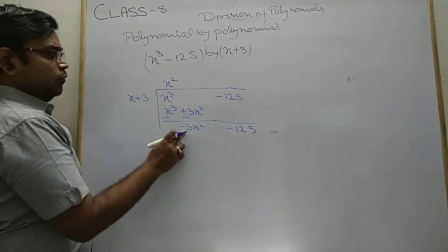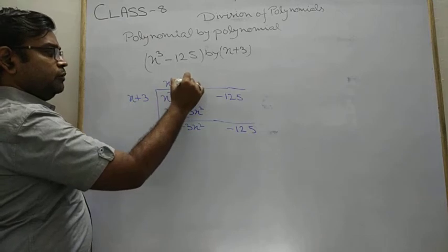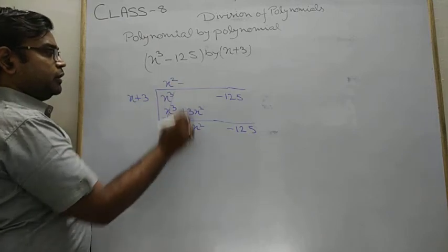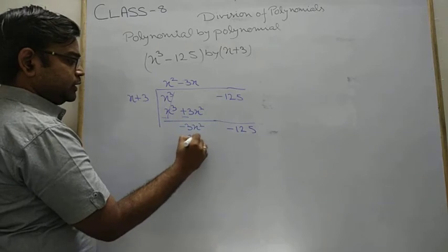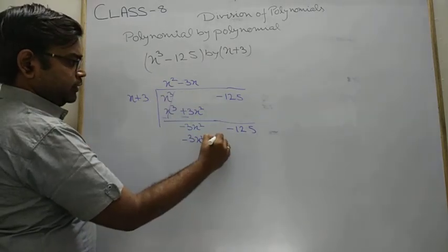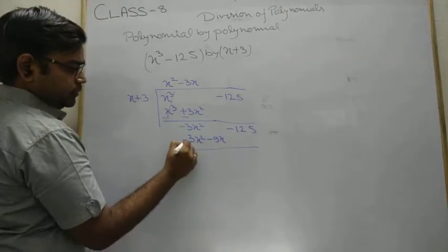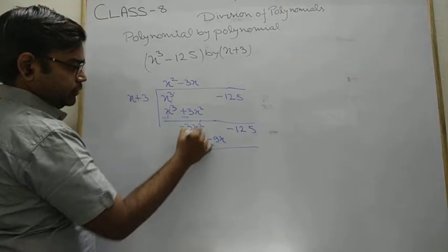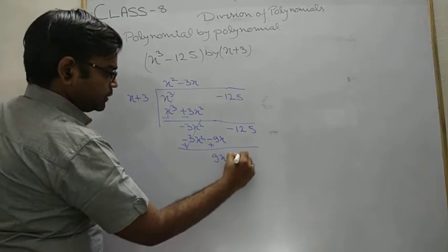Then what we have to reduce this first term. So we divide minus 3x square, so minus 3x. So what we have? We have minus 3x square. Minus 3x times minus 3x gives 9x. Change the sign. We have 9x minus 125.